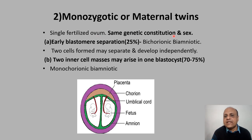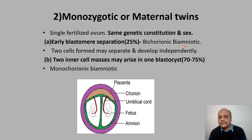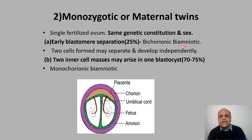Since monozygotic twins are formed from a single fertilized ovum, they have the same genetic constitution and sex. There are three scenarios. In 25% of cases, the scenario is bichorionic bi-amniotic as in fraternal twins. This occurs when at the two-cell stage after fertilization, each of the two cells separates and develops independently into an individual.